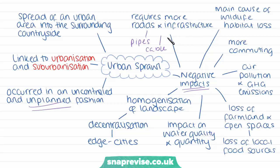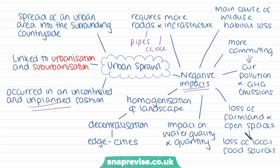It's less economically efficient to service low density rural areas compared to compact urban developments with the same number of households. The reach of urban sprawl into rural areas is one of the main causes of wildlife habitat loss. It causes more commuting from the suburbs, leading to more fuel consumption, traffic and congestion, which eventually leads to greater amounts of air pollution and greenhouse gas emissions. Urban sprawl has also contributed to the loss of farmland and open spaces surrounding cities, leading to the loss of fresh local food sources and more food miles because food has to be sourced from further away.